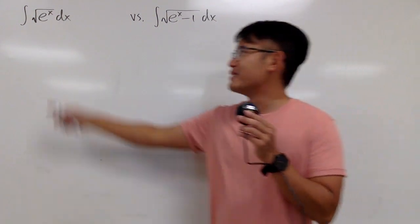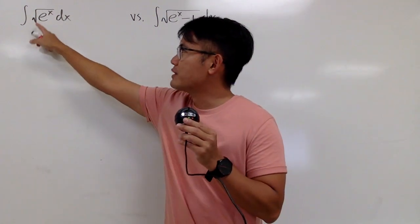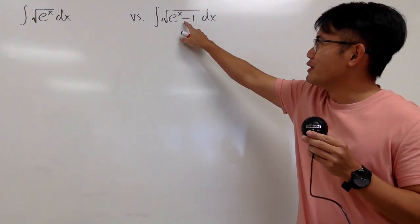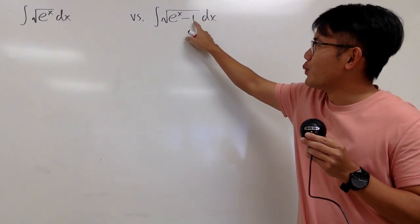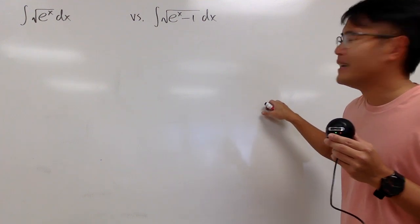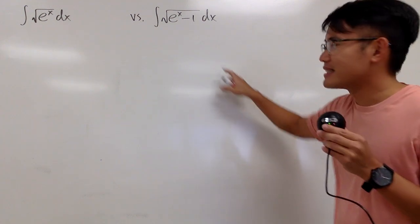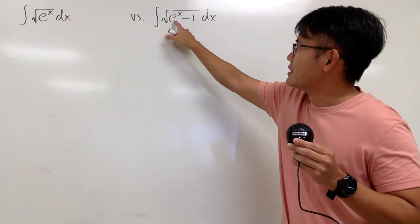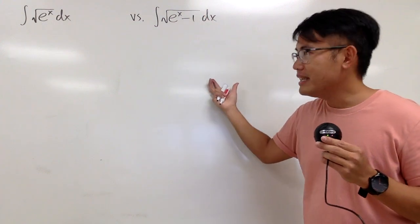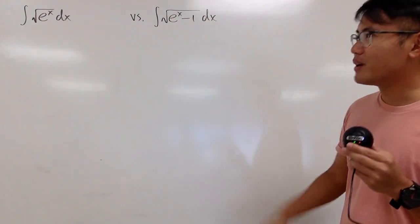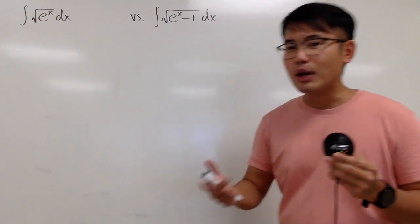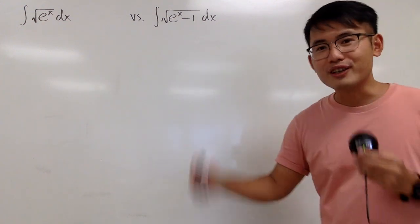We have two integrals. The first one is the integral of the square root of e to the x dx. For the second one, we have this additional minus 1 inside of the square root. Do you think that this minus 1 inside with the e to the x is going to make this integral so much more difficult than the first one? Please pause the video and try them first.